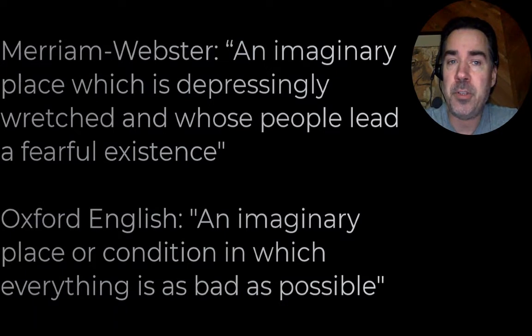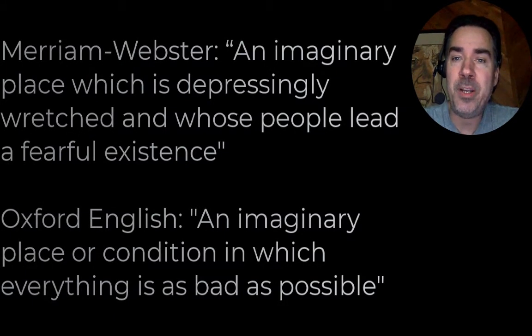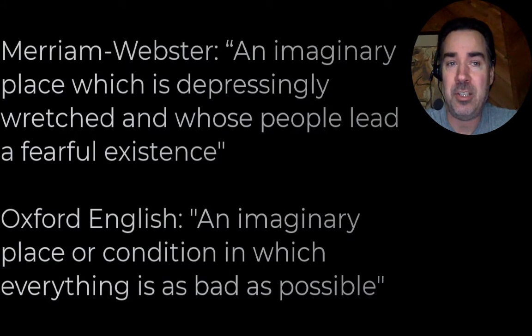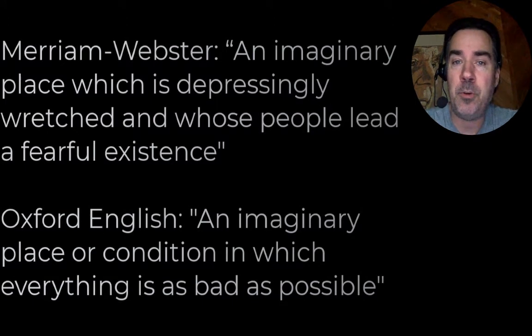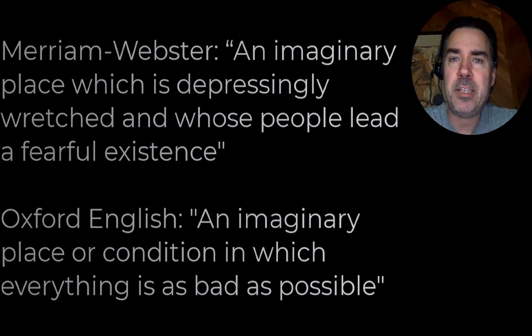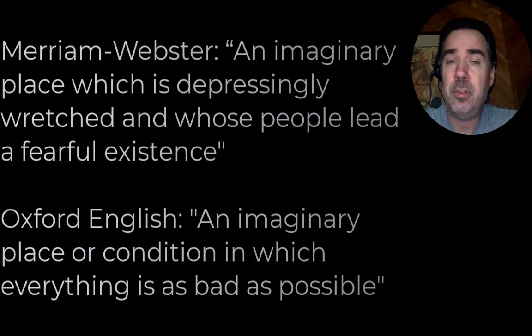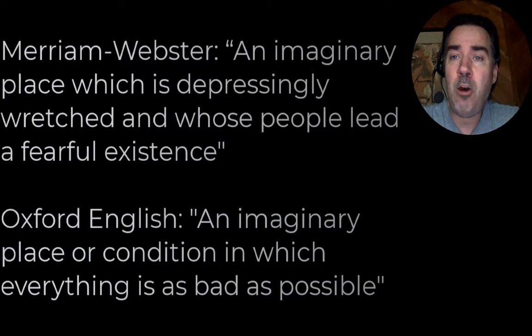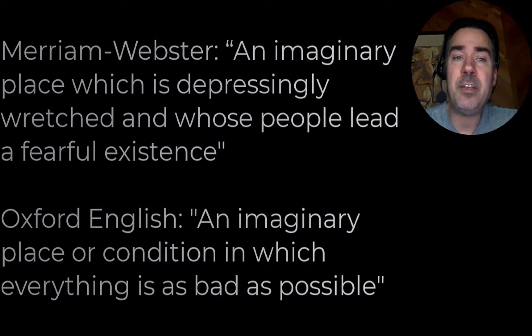So, in the most literal sense, our definition of dystopia is a bad place. More specifically, according to the Merriam-Webster Dictionary, a dystopia is "an imaginary place which is depressingly wretched and whose people lead a fearful existence." Whereas the Oxford English Dictionary defines it as "an imaginary place or condition in which everything is as bad as possible." I don't think either of those, or any of the other variations from other dictionaries, are fully accurate. While utopias may be ideal and therefore only hypothetical, I think dystopias are most definitely possible. However, I also don't think that dystopia is synonymous with the Western version of hell. I think lots of dystopias can seem pretty good on the surface — they're fine, at least for some people, as long as you don't look too closely.